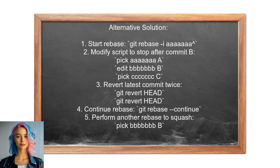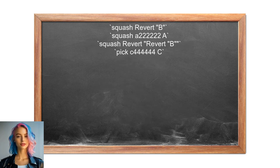One user provides an alternative method to squash a commit into the following commit during an interactive rebase while preserving the identity of the second commit. They suggest initiating the rebase, then modifying the script to stop after the commit you want to squash into. After that, you revert the latest commit twice and continue the rebase, then perform another interactive rebase to squash the commits together.